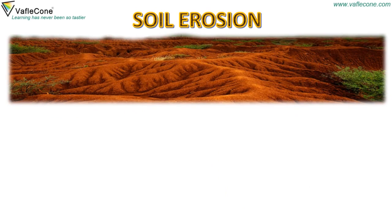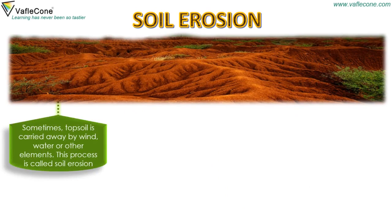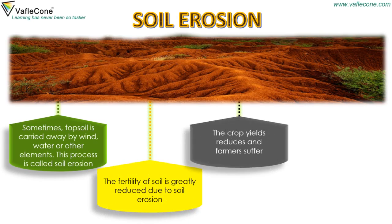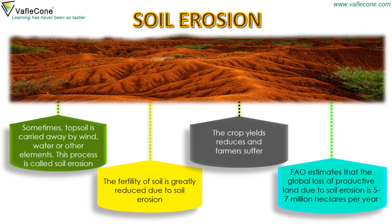Soil Erosion: Sometimes topsoil is carried away by wind, water or other elements. This process is called soil erosion. The fertility of soil is greatly reduced due to soil erosion. Crop yields reduce and farmers suffer. FAO estimates that the global loss of productive land due to soil erosion is 5 to 7 million hectares per year.